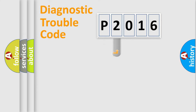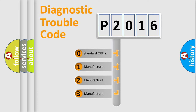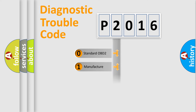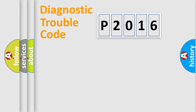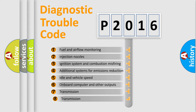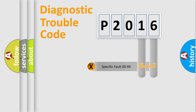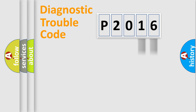This distribution is defined in the first character of the code. If the second character is expressed as zero, it is a standardized error. In the case of numbers 1, 2, or 3, it is a manufacturer-specific expression of the car error. The third character specifies a subset of errors. This distribution is valid only for the standardized DTC code, and only the last two characters define the specific fault of the group.